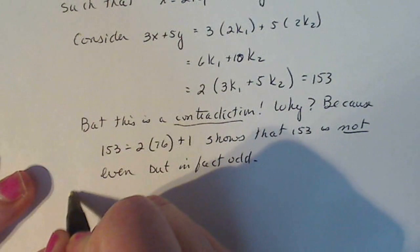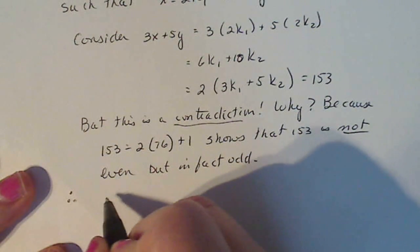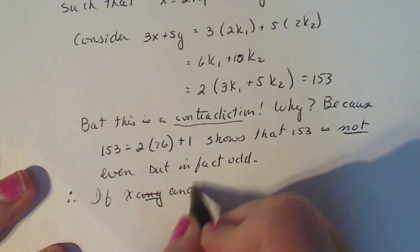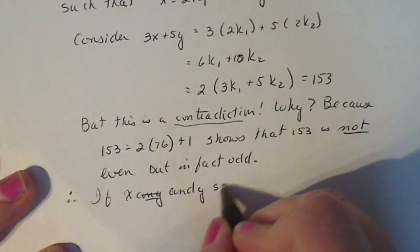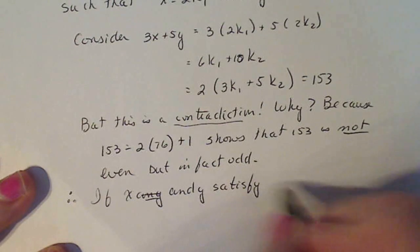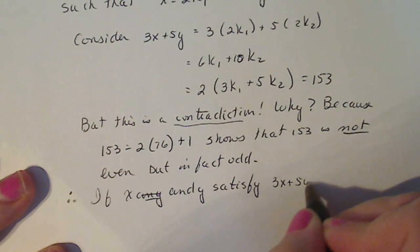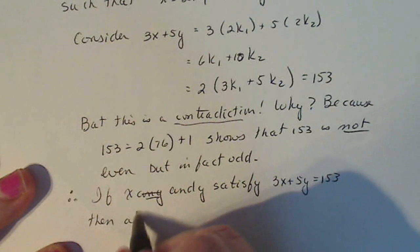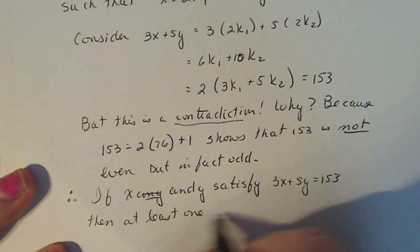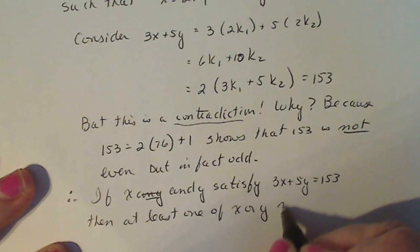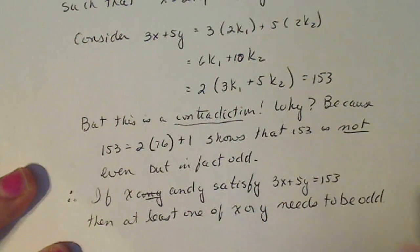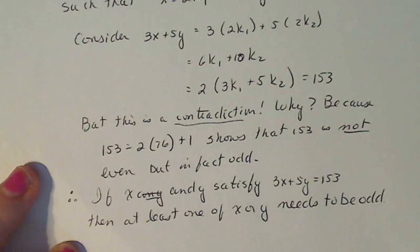Therefore, and you can use the dots. I don't care. It's fine. Therefore, if x and y satisfy 3x plus 5y equals 153, then at least one of x or y needs to be odd. Because again, we assume that that doesn't have to be the case. We showed a contradiction. So the original statement has to be true.